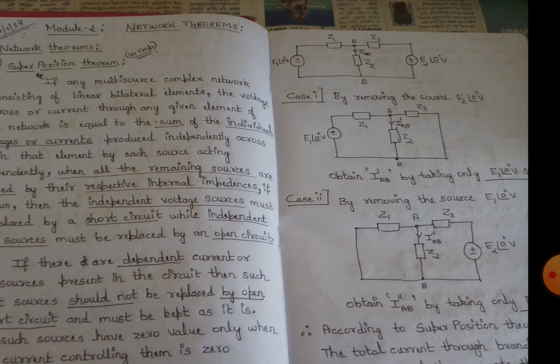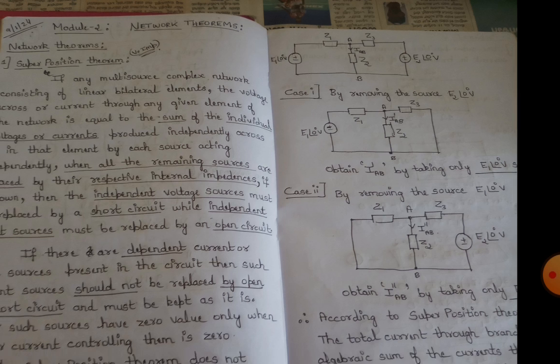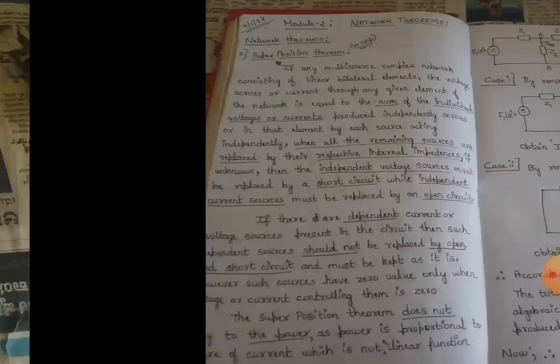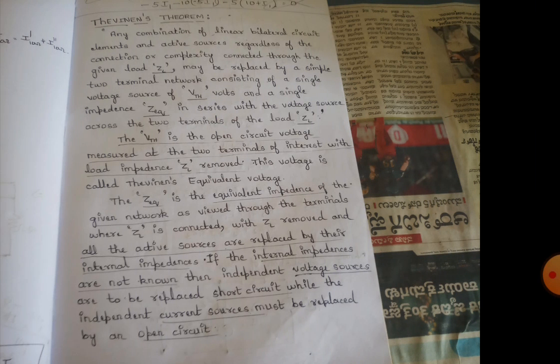In a complex network having more than one source — whether voltage source or current source — we need to calculate currents one by one. For example, if there are two voltage sources, we eliminate one at a time. A voltage source is eliminated by short-circuiting it, while a current source is eliminated by open-circuiting it. That's the superposition theorem.